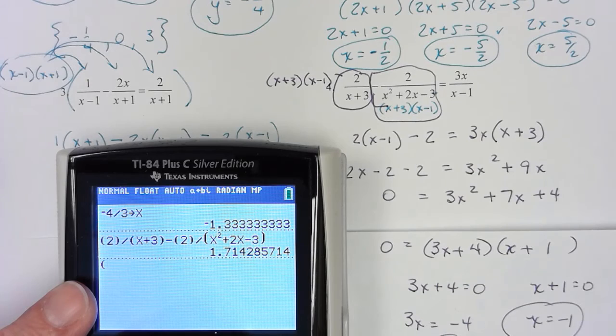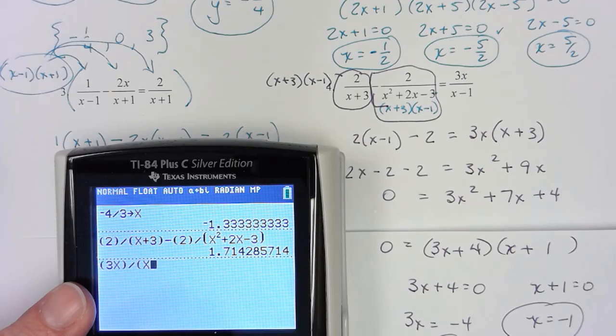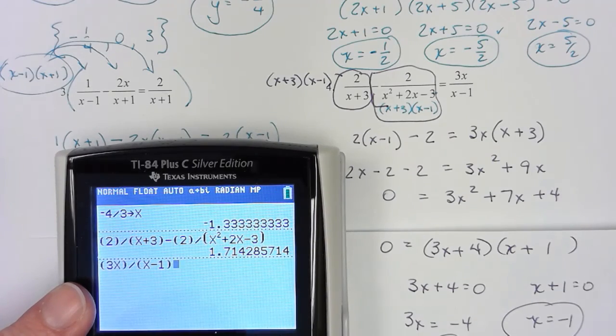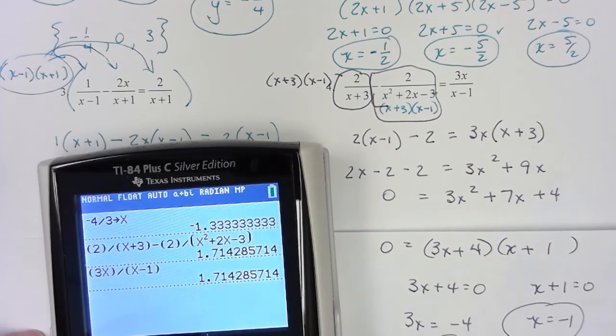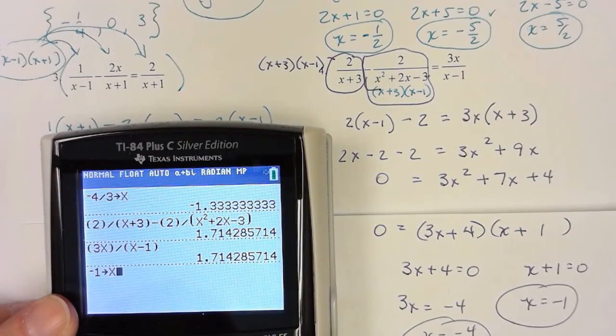Let me try the right hand side. Parentheses 3x divided by parentheses x minus 1. Yay. So I know the negative 4 thirds work. Let me try negative 1 real quick. Negative 1 storing for x.